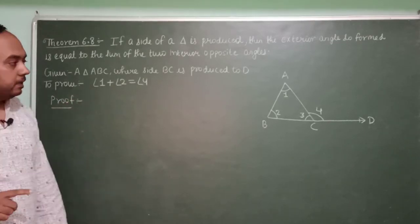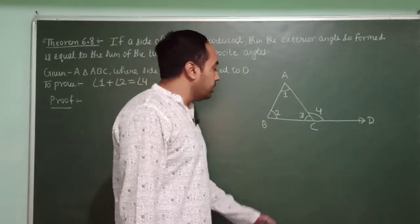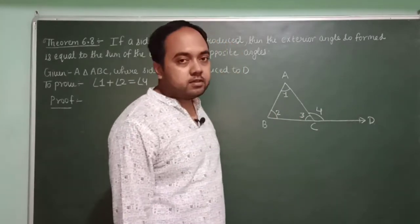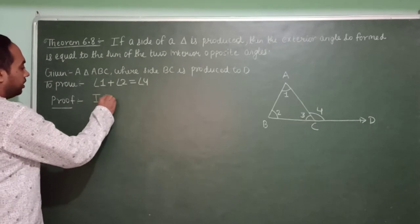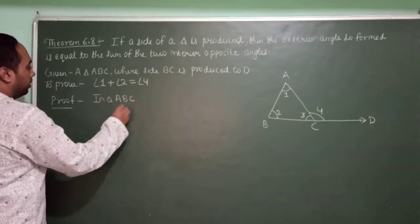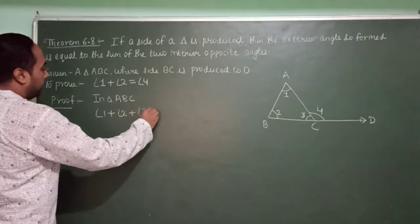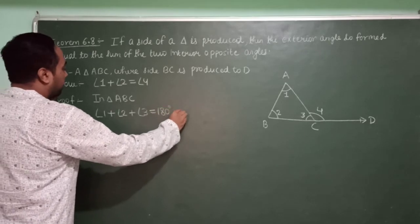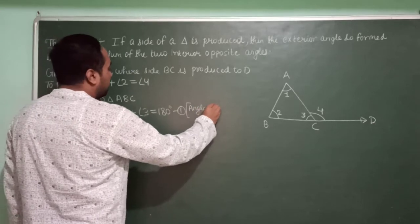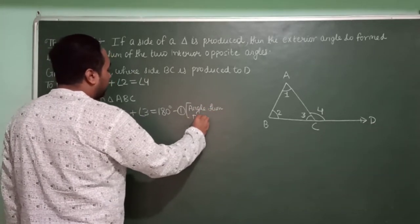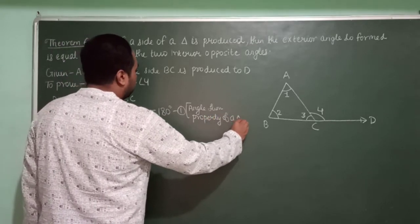Before this theorem we studied the angle sum property of a triangle. In triangle ABC, by the angle sum property: angle 1 plus angle 2 plus angle 3 equals 180 degrees. This is equation number 1, by angle sum property of a triangle.